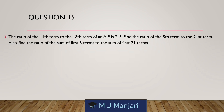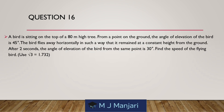Question 15. The ratio of the 11th term to the 18th term of an AP is 2 is to 3. Find the ratio of the 5th term to the 21st term. Also find the ratio of the sum of the first 5 terms to the sum of the first 21 terms.